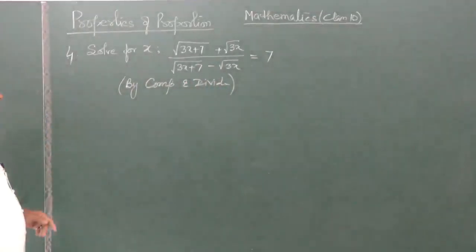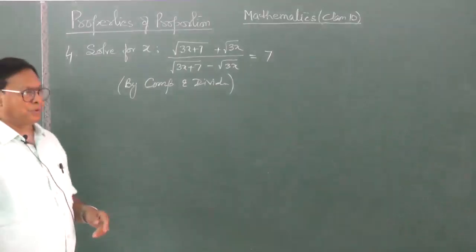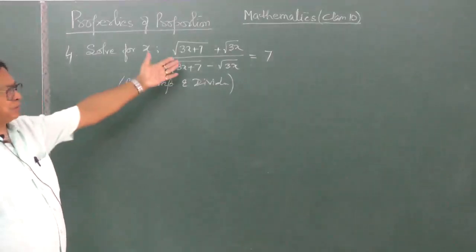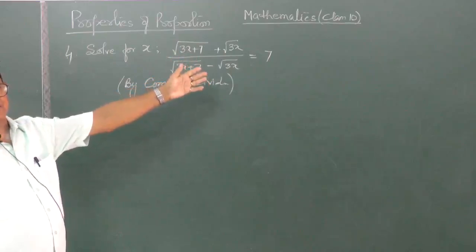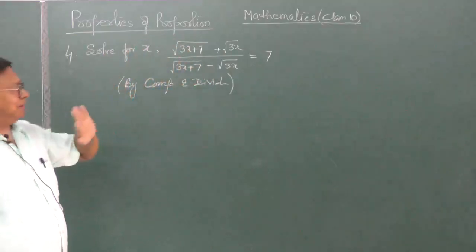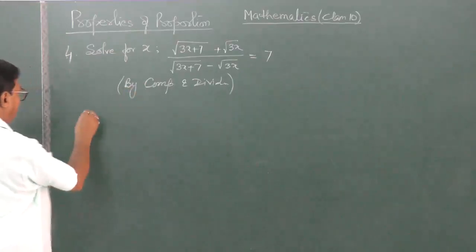Now, look at this. If you have to solve it and if you do not use proportion, first you have to square it to remove the square root and then you have to square it further. So, we use componendo dividendo.